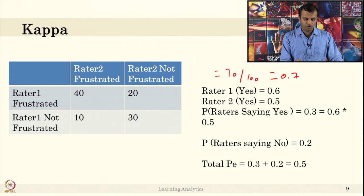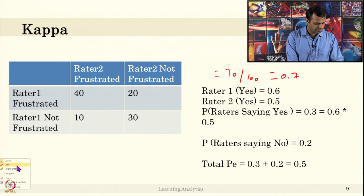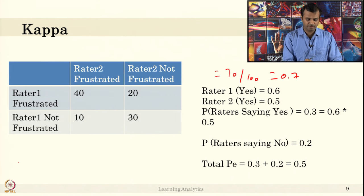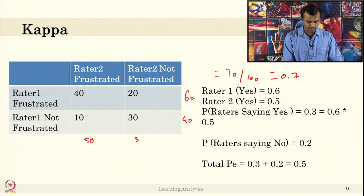What is rater 1 yes agreement? Let us compute PE now. What is the rater 1 agreement? Rater 1 says 60 percent of time yes, yes for 60 percent of time compared to all 100 samples. 60 percent of time he says yes, that is 40 plus 20, 60. This is 60, this is 40. It is rater 1's agreement. This is 50 and this is 50 if you just add these two values.